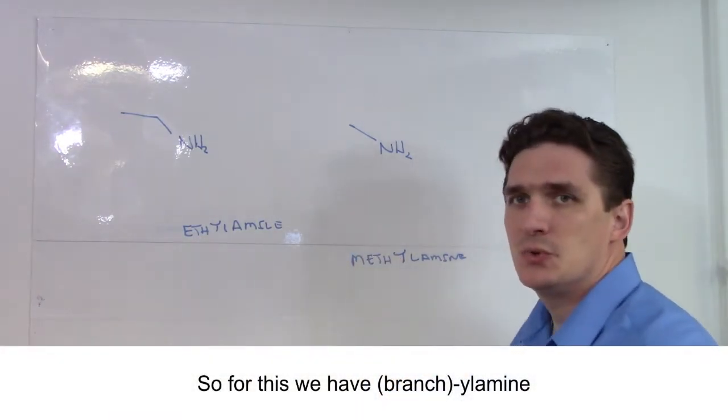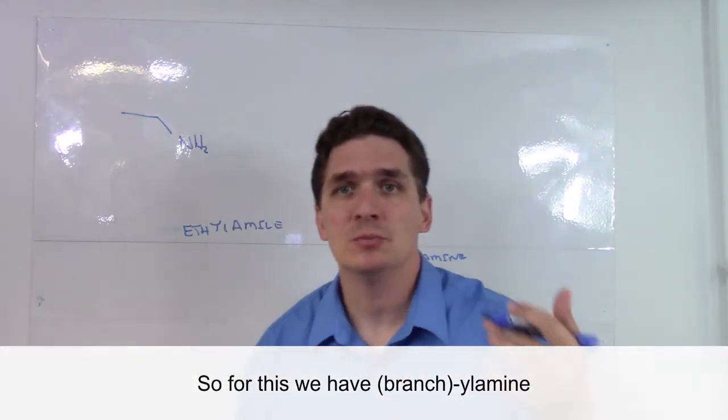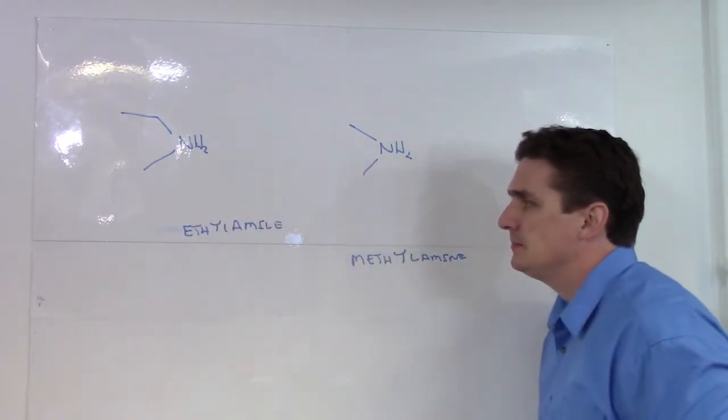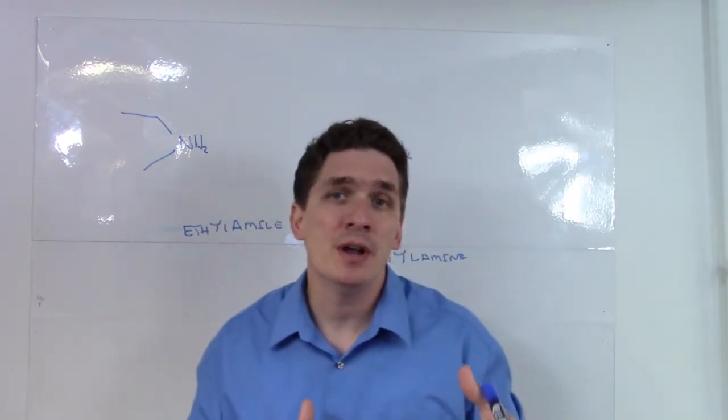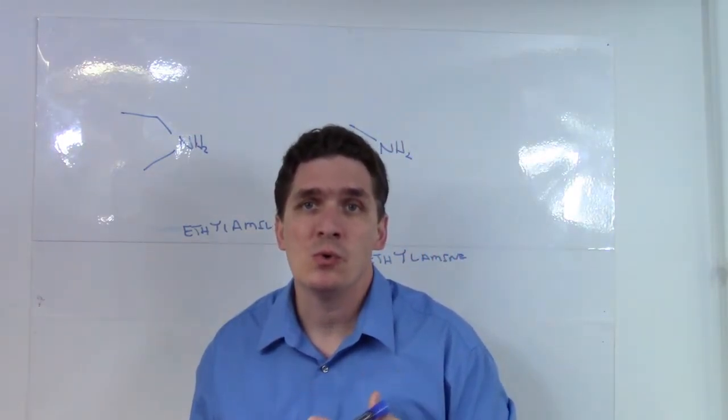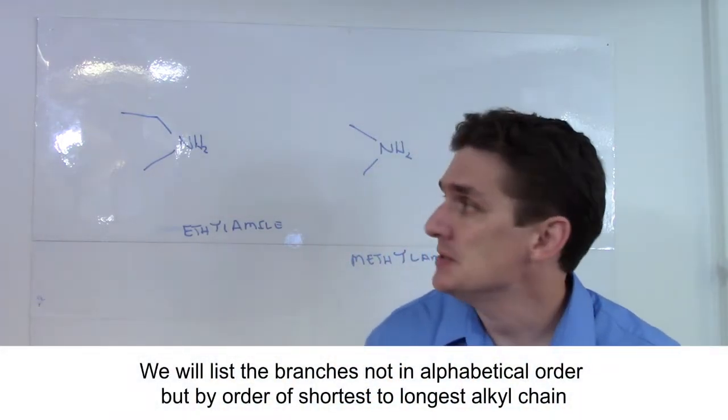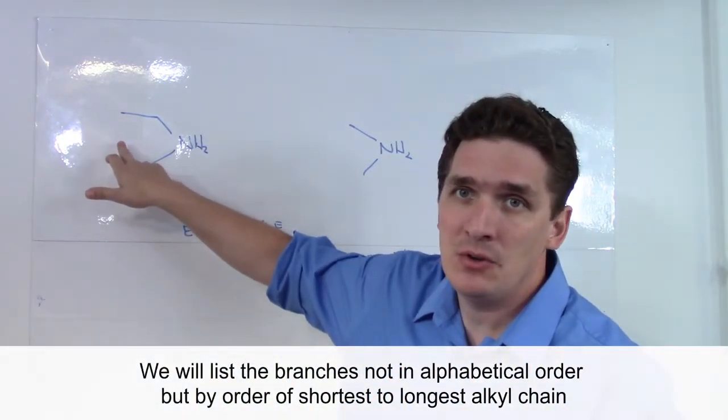So what happens when we put an additional alkyl branch off of this? Let's just put a methyl on both. Well, here's a few things: first of all, we're not going to arrange it by alphabetical order. We're going to list the groups by how long the carbon chain is. So methyl, even though alphabetically it comes after ethyl, because methyl is the shortest, we're going to have the methyl.